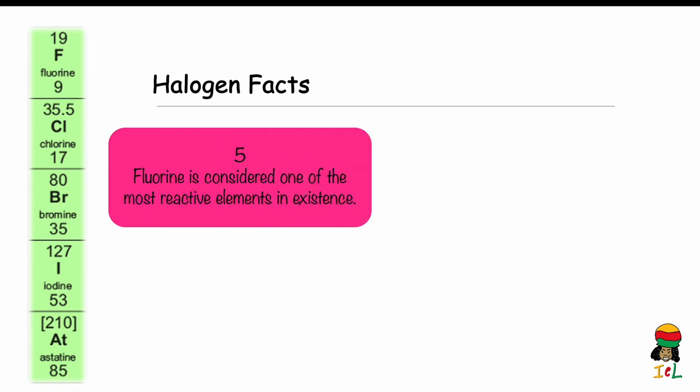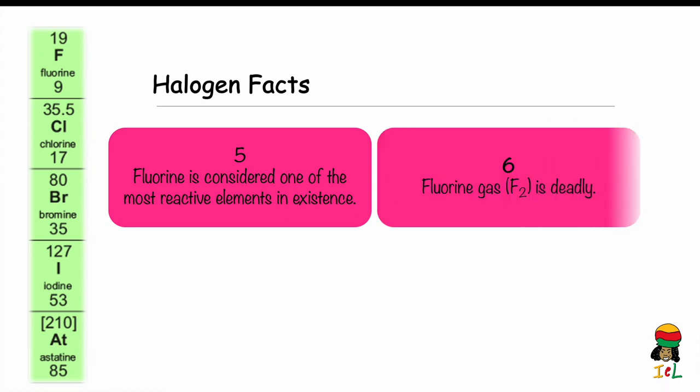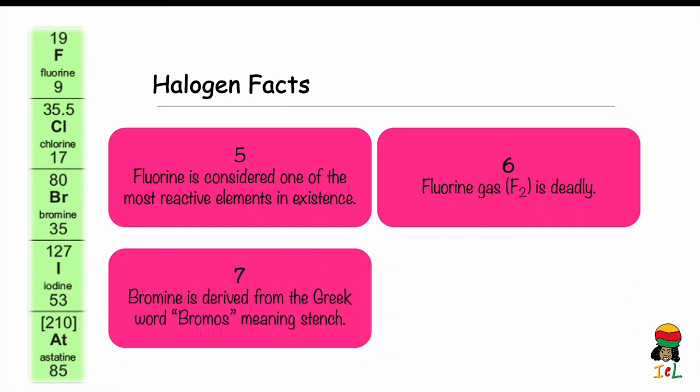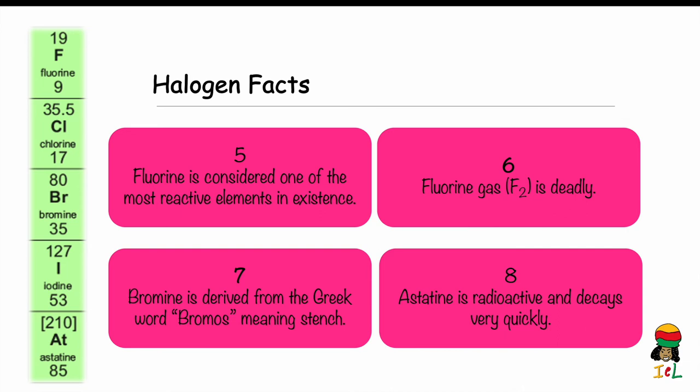Fact 5: Fluorine is considered one of the most reactive elements in existence. Fact 6: Fluorine gas, F2, is deadly. Fact 7: Bromine is derived from the Greek word "bromus", meaning stench — so you can imagine what bromine smells like. Fact 8: Astatine is radioactive and decays very quickly.